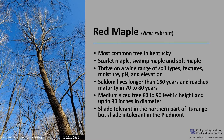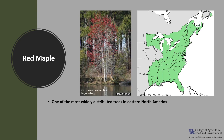It is considered shade tolerant in the northern part of its range but shade intolerant in the Piedmont. Red maple is one of the most widely distributed trees in eastern North America, a common tree throughout the entire eastern United States into the central part of the country.